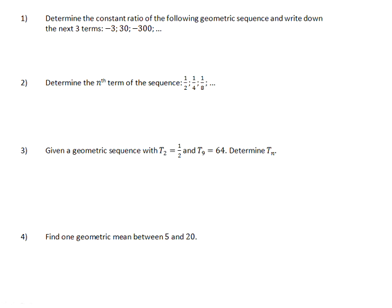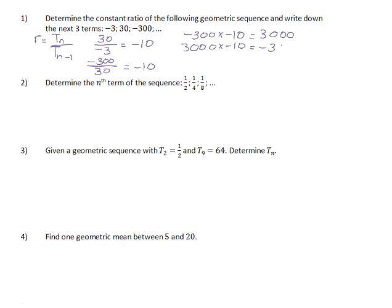Question one: determine the constant ratio of the following geometric sequence and write down the next three terms. We know that the ratio is the term divided by the term before it. If we take term 2 and divide it by term 1, we get negative 10. If we take term 3 and divide it by term 2, we also get negative 10. Therefore, the constant ratio is negative 10. To get the next three terms: negative 300 times negative 10 gives positive 3,000; positive 3,000 times negative 10 gives negative 30,000; and negative 30,000 times negative 10 gives positive 300,000.